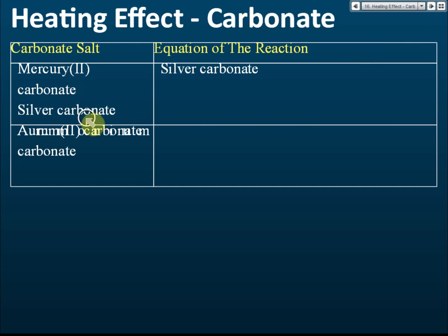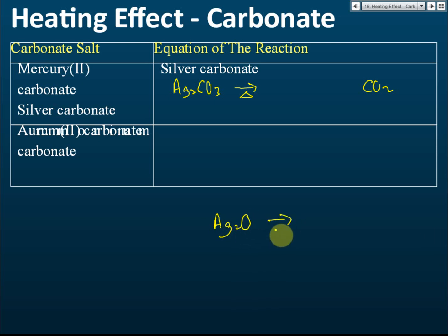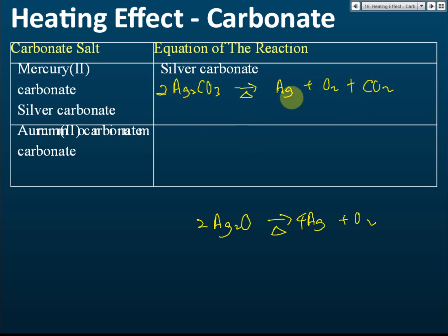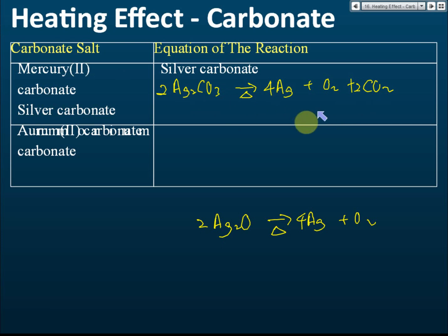For silver carbonate (Ag₂CO₃) and mercury carbonate, heating produces carbon dioxide gas and silver oxide. If you continue heating, the silver oxide further decomposes to give silver metal and oxygen gas. So overall, heating silver carbonate gives silver, oxygen, and carbon dioxide.